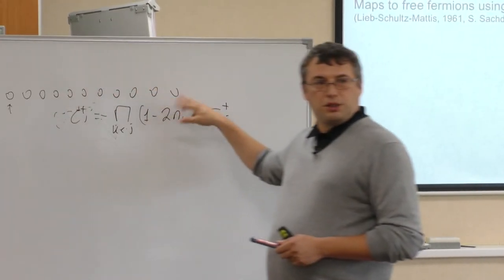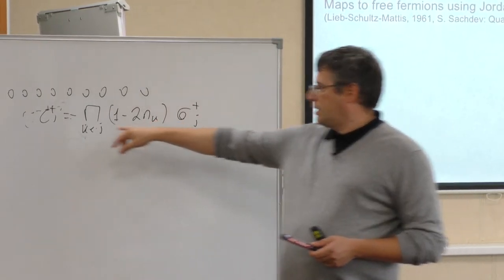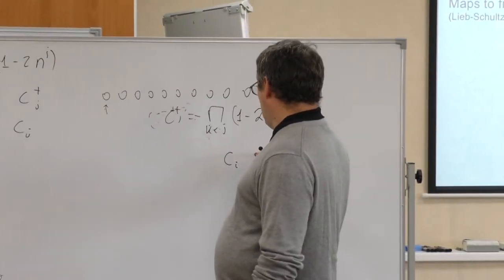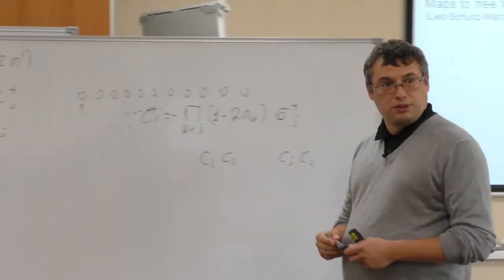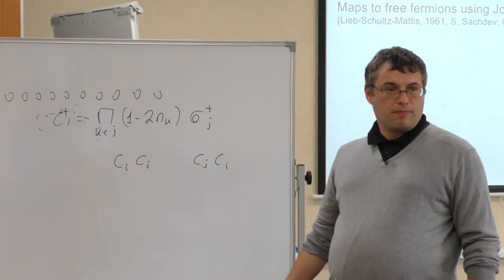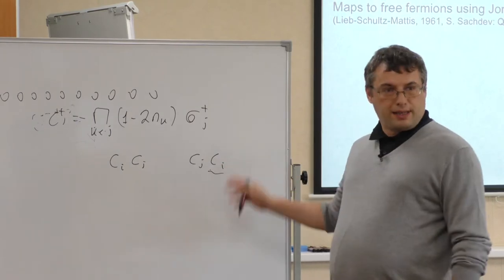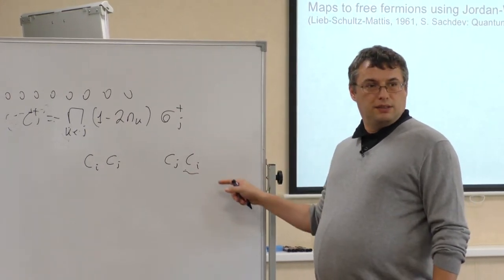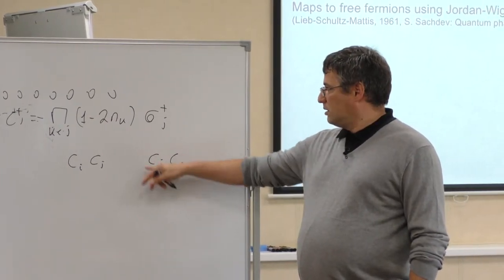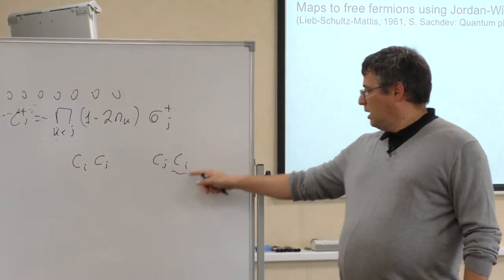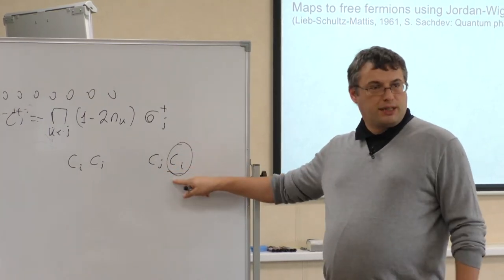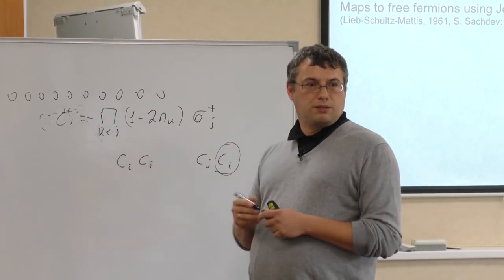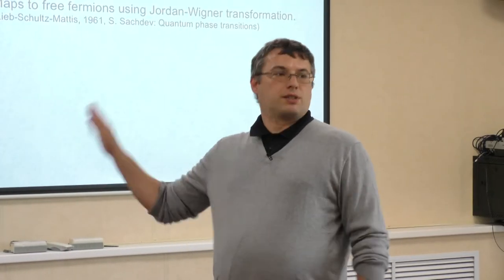This works perfectly for a single site, but for different sites, operators commute rather than anticommute—so this can't be the whole story. The clever trick is to add a string: c-dagger counts the number of spins up before site j, using the product over k less than j of (1 minus 2n_k) times sigma-plus_j. With this string, you can immediately see why these operators will anticommute, satisfying the correct anticommutation relations.